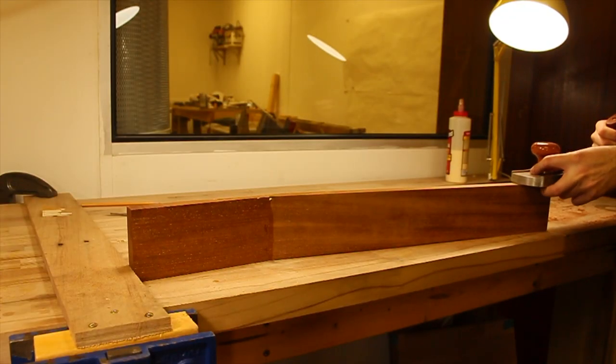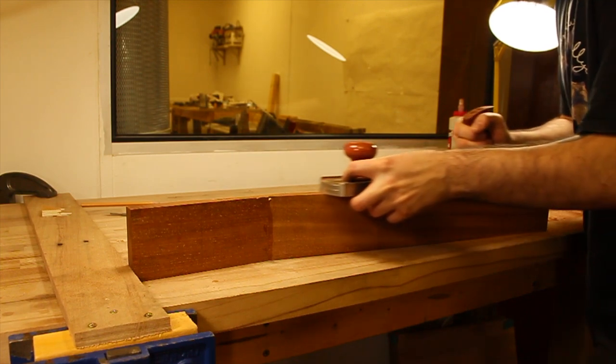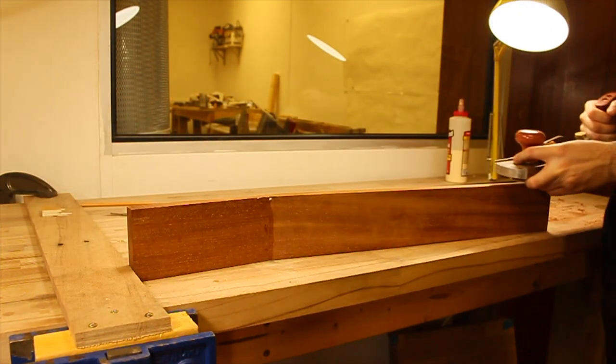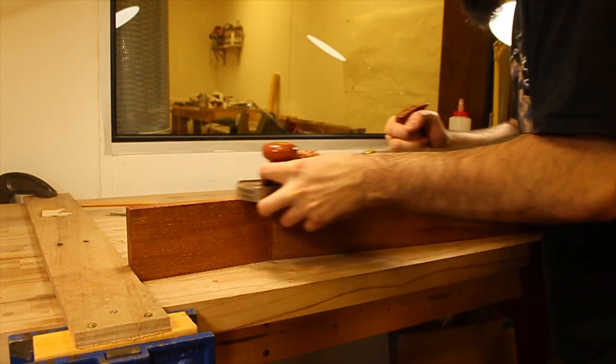The edge of the neck is then squared up one more time. This will actually be the last time I use this method as I find a much more efficient and reliable system later for the truss rod and carbon fibre slots.